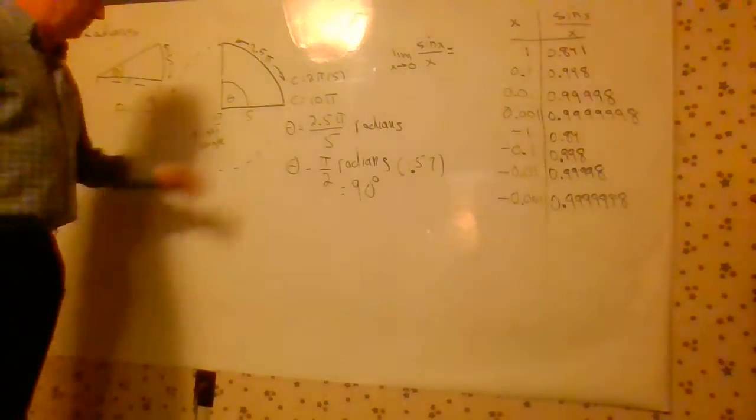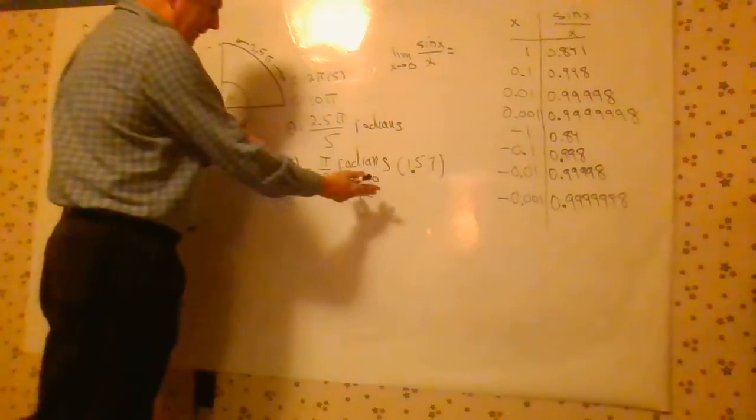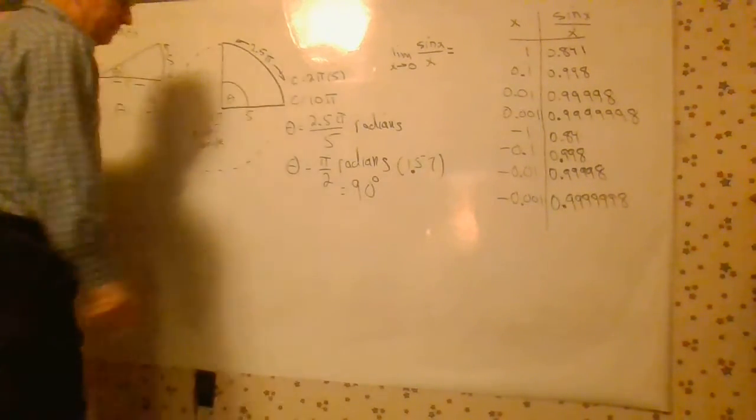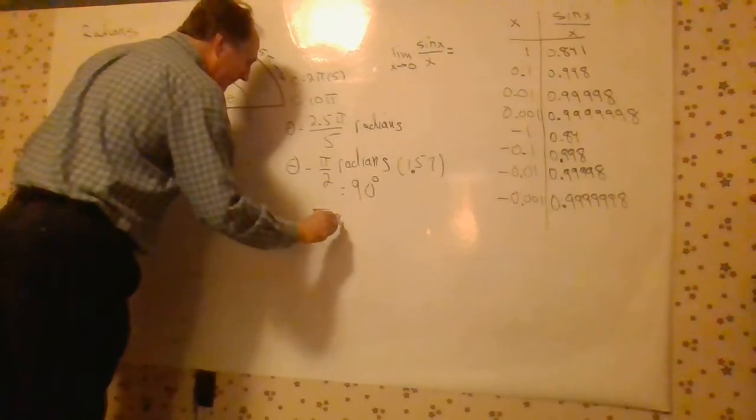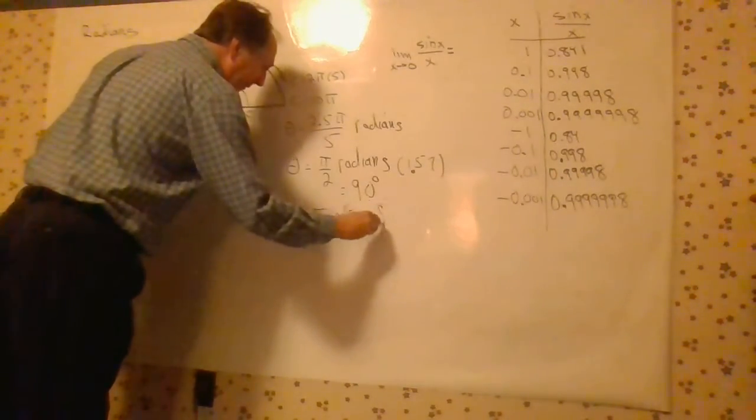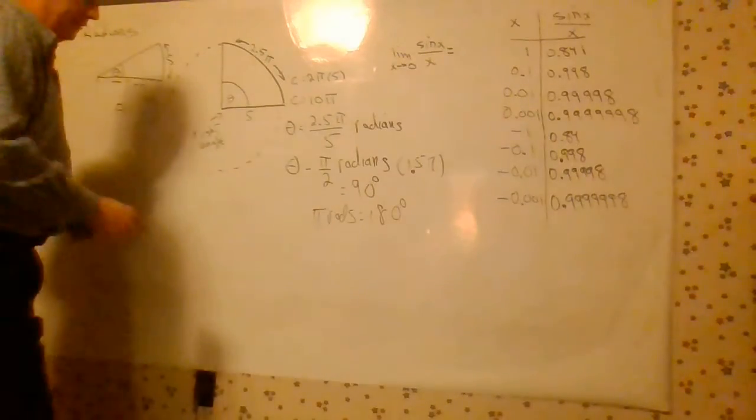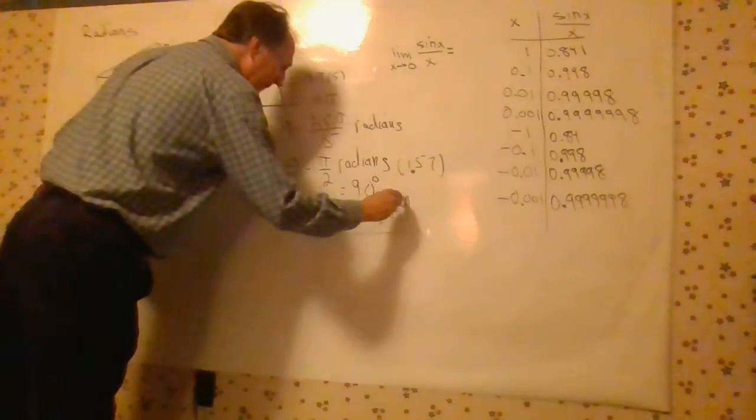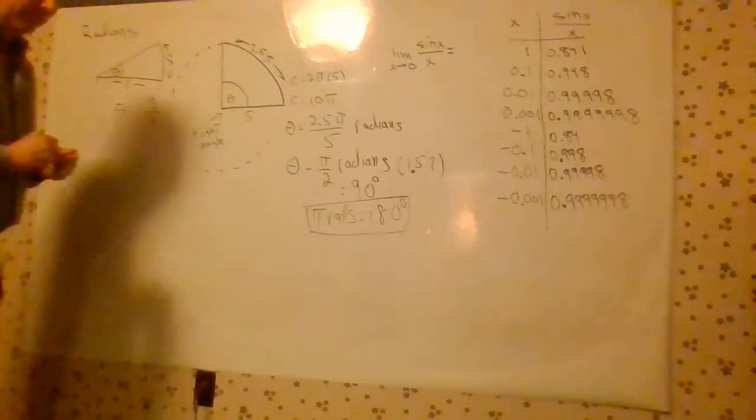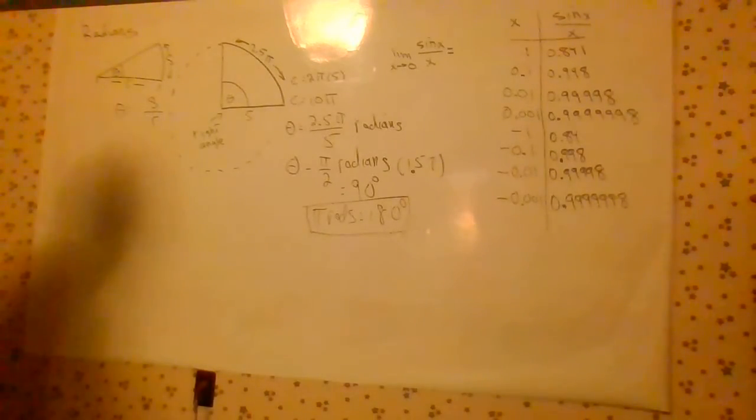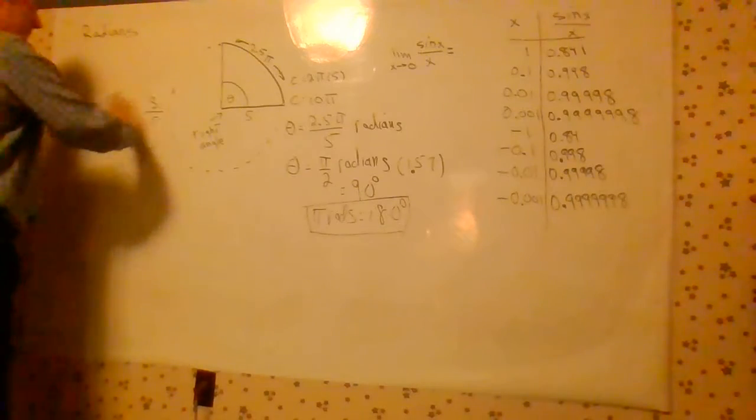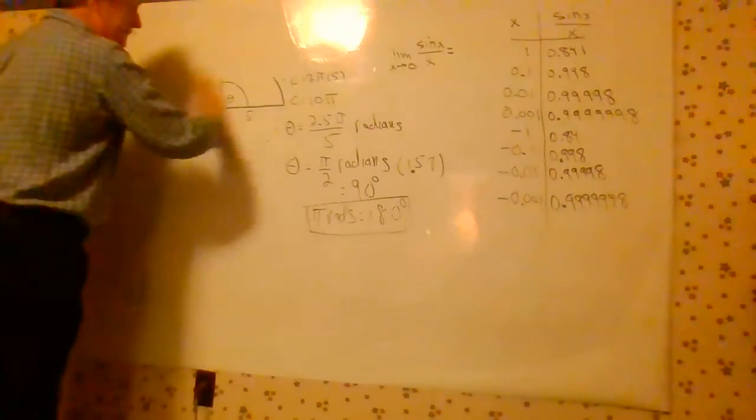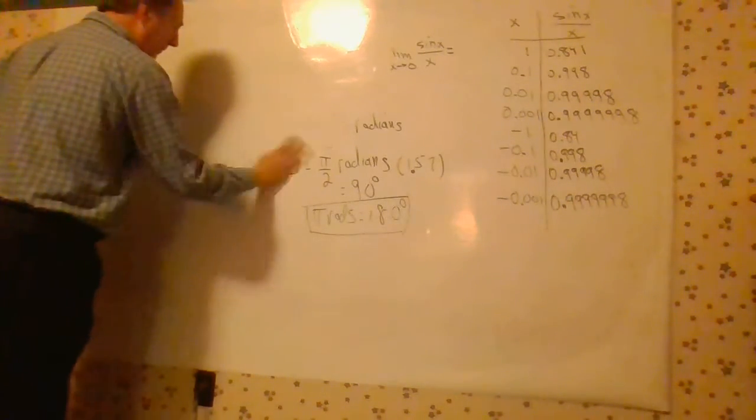You can double both sides of this conversion factor. Twice that is pi radians, and that's 180 degrees. That's a fairly familiar conversion factor if you've worked with radians before. So let me show you a couple problems. They're good to know.